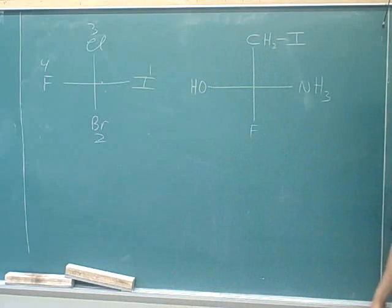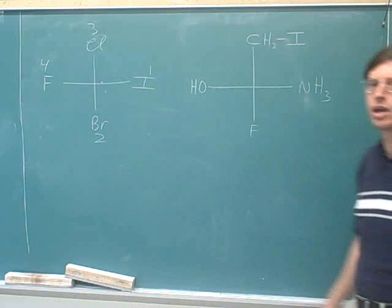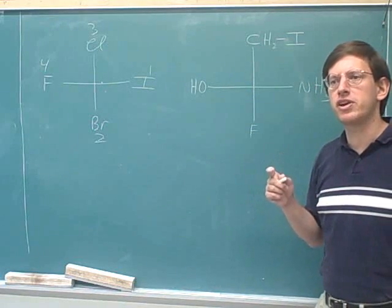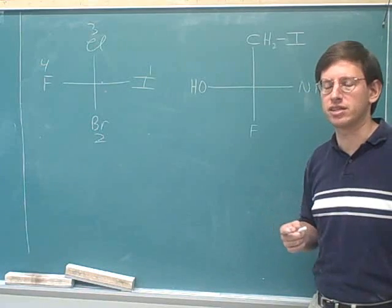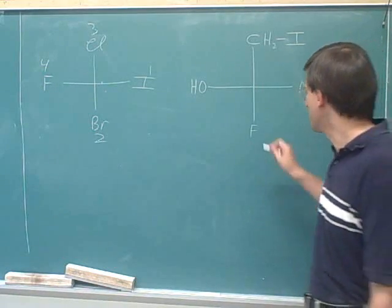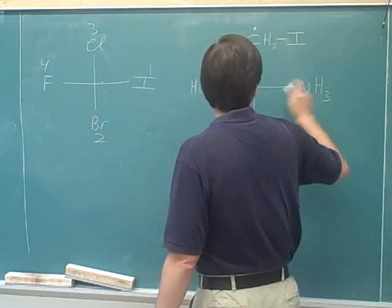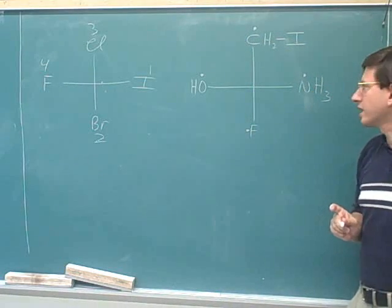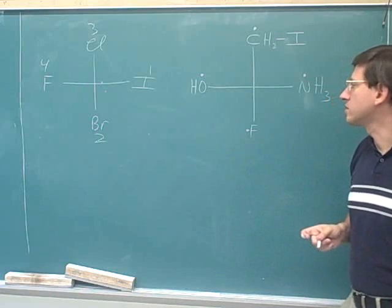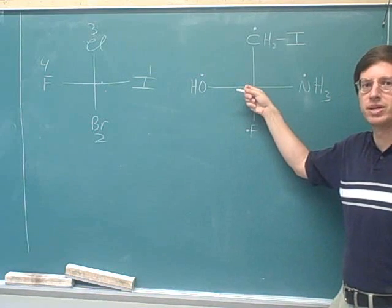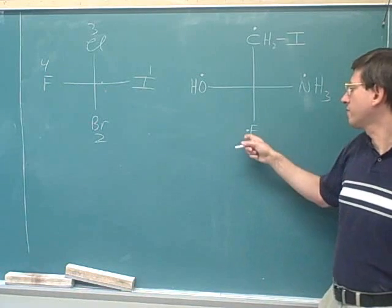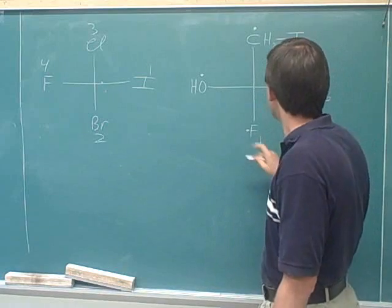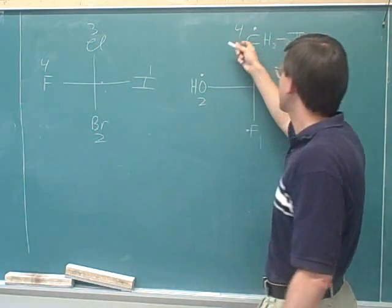Now let's assign priorities to another set of groups. When assigning priorities, you should start by comparing only the atoms that are directly connected to the stereocenter. In this example, those four atoms are: fluorine, oxygen, carbon, and nitrogen. We're not looking at the hydrogens or the iodine yet because those atoms are not directly connected to the stereocenter at the middle of the Fischer diagram. Based on atomic numbers, fluorine gets the highest priority, then oxygen, then nitrogen, then carbon gets the lowest priority.